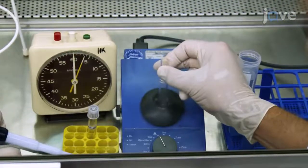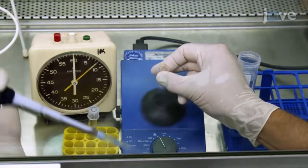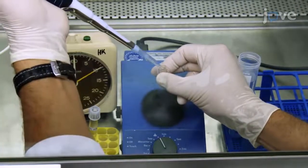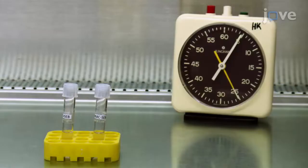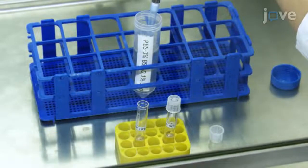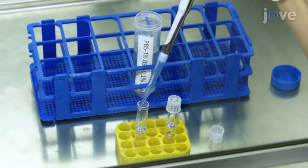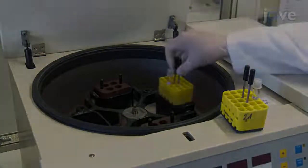Then, gently vortex the cells for 10 seconds at 100 rpm while adding 1.5 milliliters of 1.5% paraformaldehyde. After 10 minutes at room temperature, stop the fixation with 1 milliliter of PBS supplemented with 1% BSA and collect the cells by centrifugation.